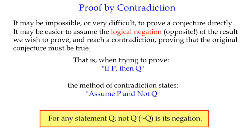In order to do proof by contradiction, what we're going to do is we're going to try and prove something not directly, but kind of the opposite. We're going to prove that the opposite of the conjecture doesn't work. That's the contradiction part.